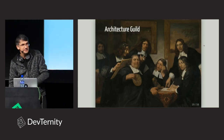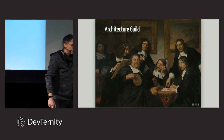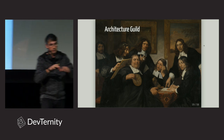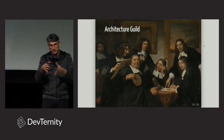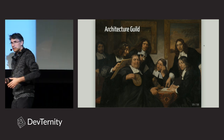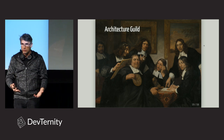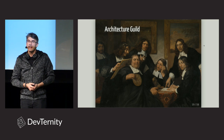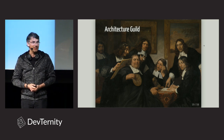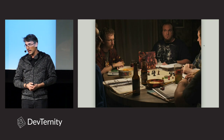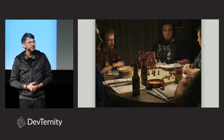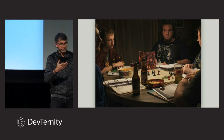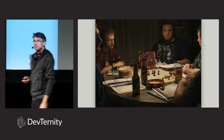That brings us to the third approach — an architecture guild. Since you have so many architects, one per team, or the whole team responsible for architecture, let's get all those people together and have them work in a professional way. Sometimes it works. But sometimes those guilds look dysfunctional. How do you recognize a dysfunctional guild? It's very simple.